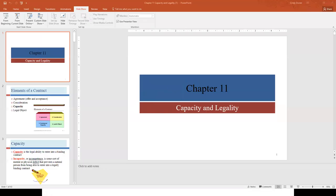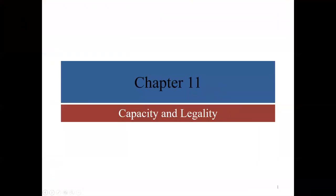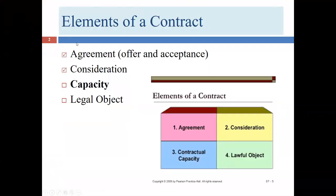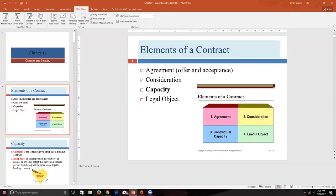We have our four elements of contract law. We've discussed agreement in Chapter 9, consideration in Chapter 10, and in Chapter 11 we're talking about the last two requirements: capacity and legal object.